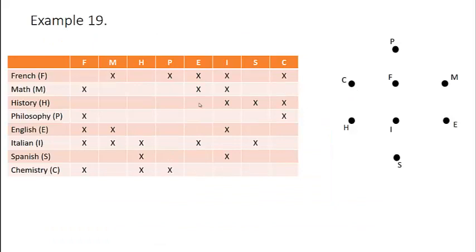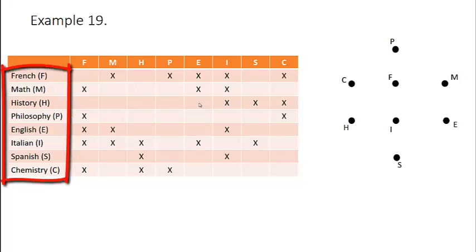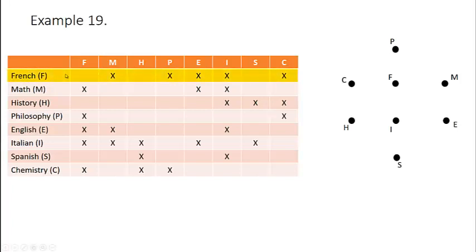So here we go. Here is our table and we're going to translate the information from the table into a graph. We've started by making a vertex for each course listed in our table. And now what we're going to do is we're going to add edges between vertices where there is a conflict. So starting at our top row of French, for French we need to add an edge between the vertices of math, philosophy, English, Italian, and chemistry because there are students enrolled in each of those courses. So we do so on our graph.